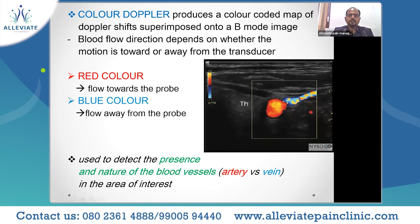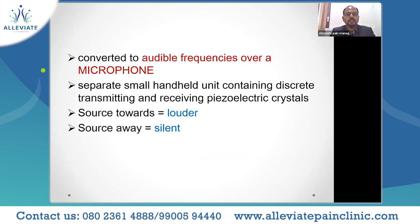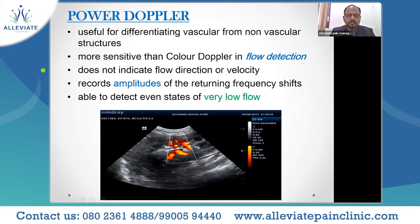Color Doppler produces a colored map of Doppler shift superimposed onto the B-mode image: red is towards the probe and blue is away from the probe. We should always do a scout scan prior to any injections or procedure to identify blood vessels in the area of interest. Power Doppler is much more sensitive than color Doppler for detecting low-flow vessels, but doesn't indicate direction or velocity — it just detects whether any low-flow is present.